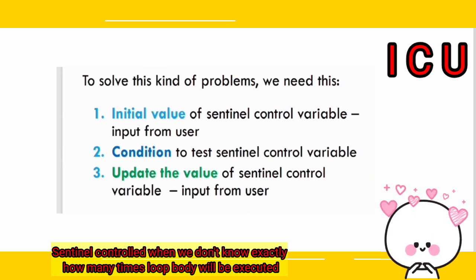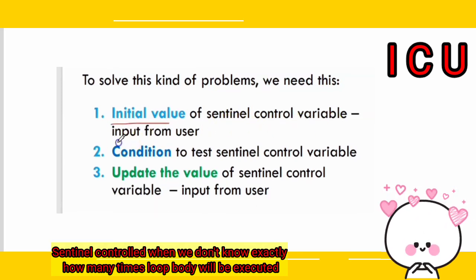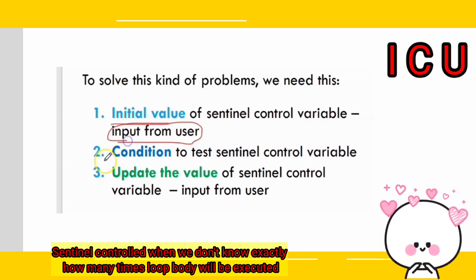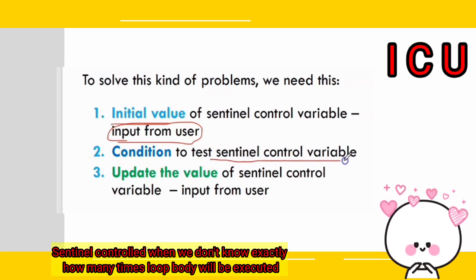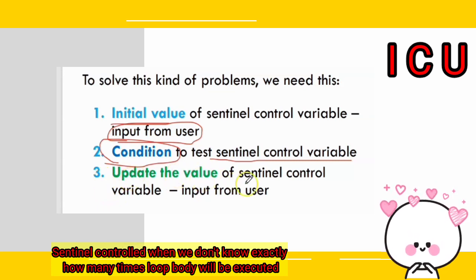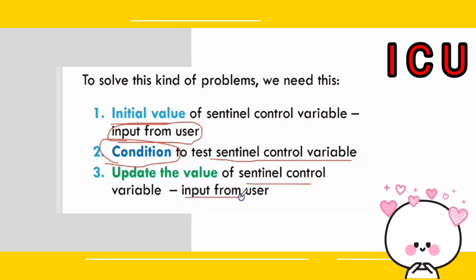To solve this kind of problem we need three guidelines. First: the initial value of the sentinel control variable, which is input from the user. Second: the condition to test the sentinel control variable. Third: update the value of the sentinel control variable. The condition is radius greater than or equal to zero, which also comes from user input.